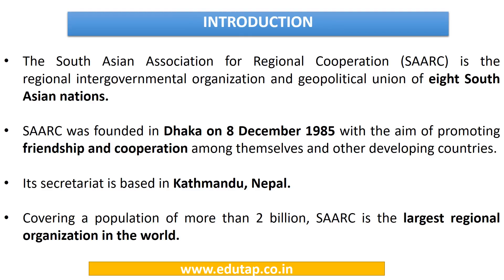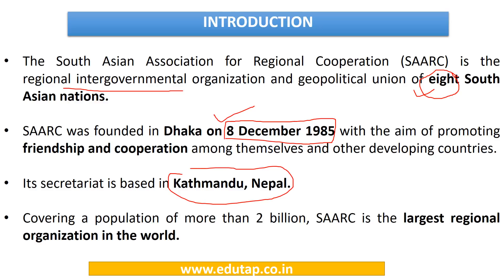SAARC is a regional intergovernmental organization of eight South Asian nations, founded on 8th December 1985, with the aim of welfare of the people of South Asia, having its secretariat located at Kathmandu, Nepal. Important points to note from an exam perspective are the year of formation, number of member countries, and the location of its secretariat.